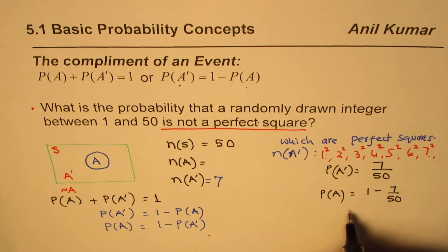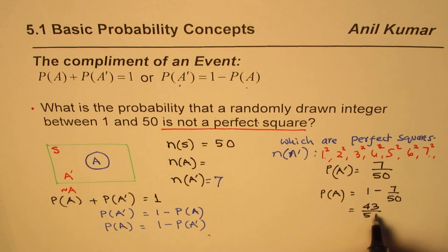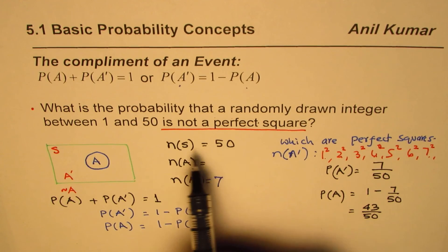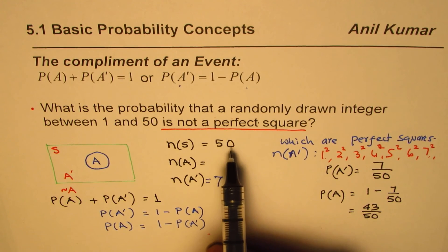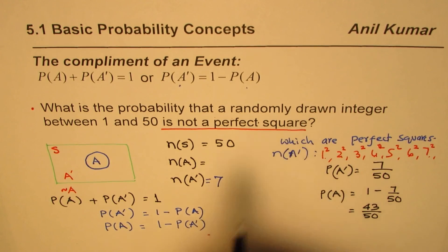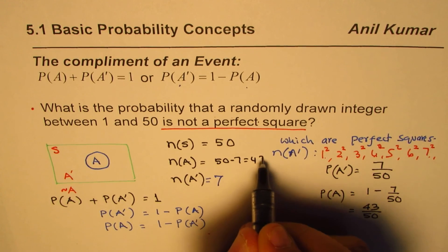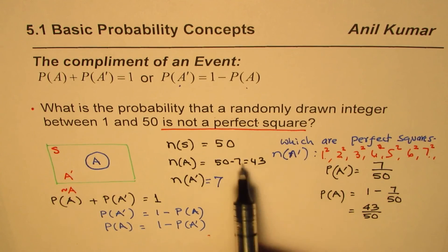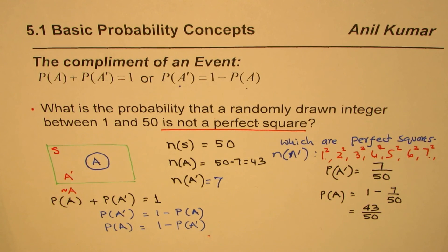Therefore the probability of getting not a perfect square is 1 minus 7 over 50, which gives us 43 over 50. You could also find this directly: out of 50 outcomes, 7 are perfect squares, so 50 minus 7 equals 43 are not perfect squares, giving a probability of 43 over 50. I hope this example helps you understand how the complement of an event can be used to find probability.